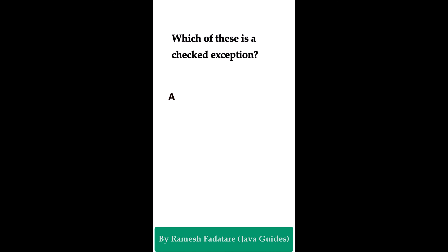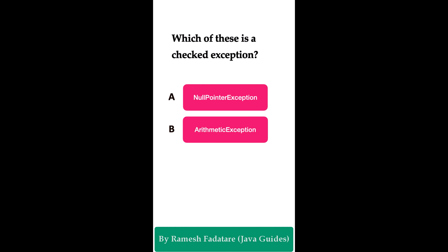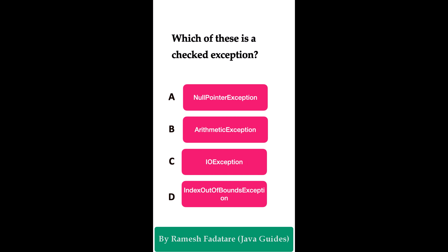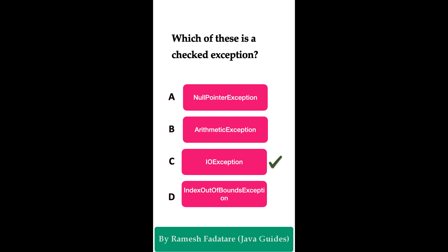Which of these is a checked exception? Option A: NullPointerException. Option B: ArithmeticException. Option C: IOException. Option D: IndexOutOfBoundsException. The correct answer is IOException. In Java, IOException is a built-in checked exception. Checked exceptions need to be either caught or declared in a method signature using the throws keyword.